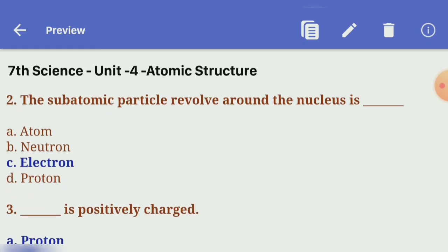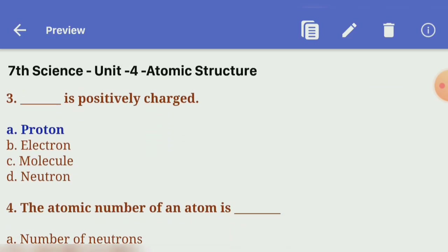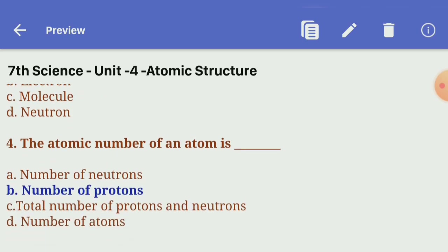Second one: the subatomic particle that revolves around the nucleus is — Answer C, Electron. Third one: which particle is positively charged? — Answer A, Proton.